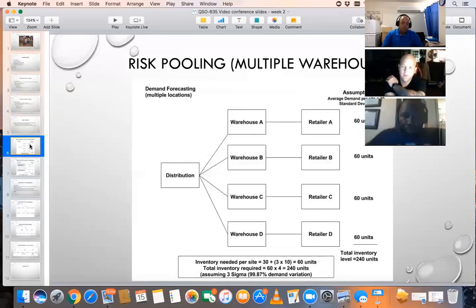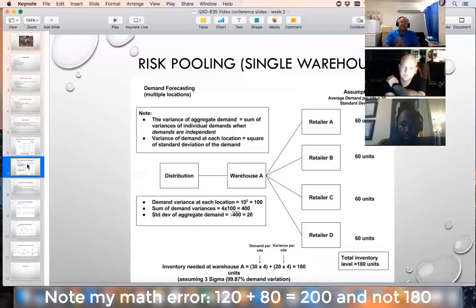Now, when we risk pool, the basic concept is we're going to move the warehousing to address as many retailers as possible, and the effects are pretty significant. So, let's say that we get rid of three of the four warehouses. Now, we only have one warehouse supplying four retailers.